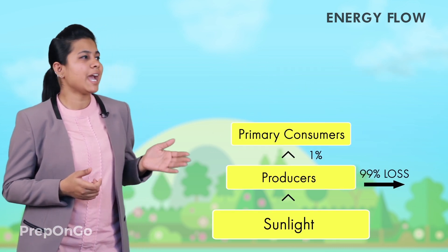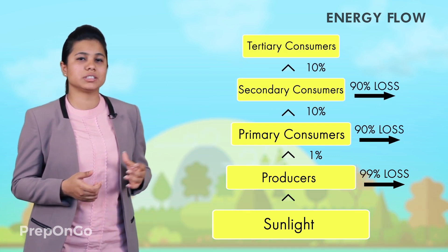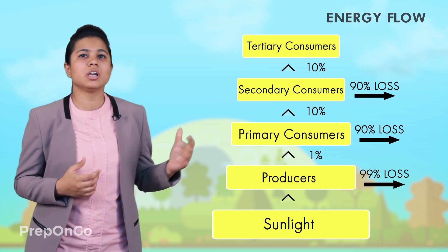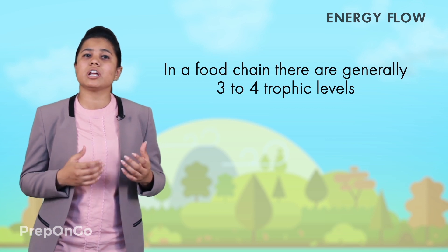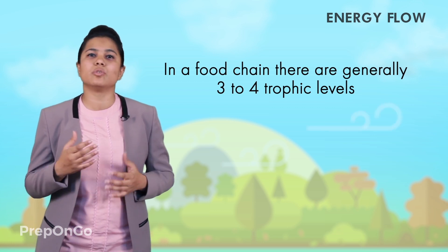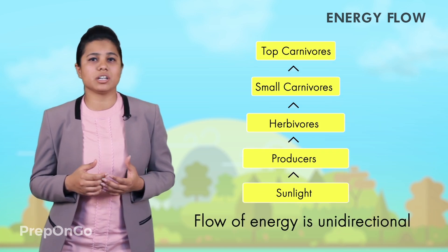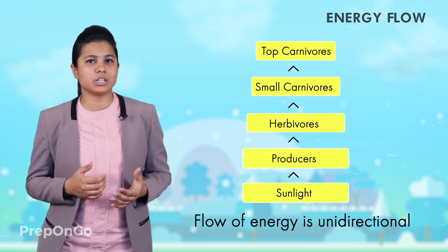You can see in this diagram of energy flow that as we move up, the amount of available energy decreases. This can be represented by the size of the boxes, as less energy is available for subsequent trophic levels. In a food chain, there are only 3 to 4 trophic levels. One important thing to note is that the flow of energy is unidirectional, which means energy once taken cannot be reverted back.